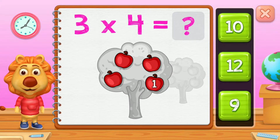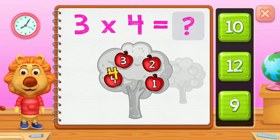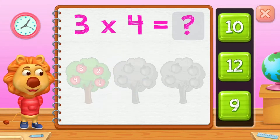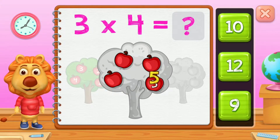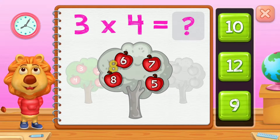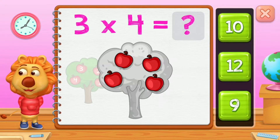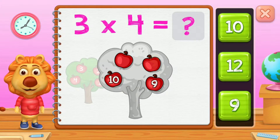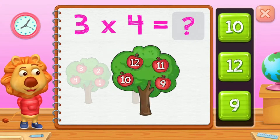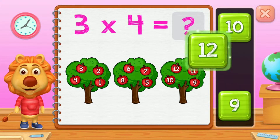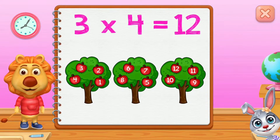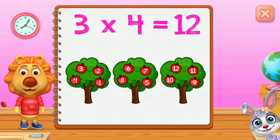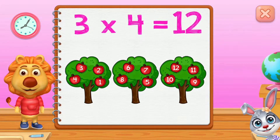One, two, three, four, five, six, seven, eight, nine, ten, eleven, twelve. Three groups of four equals twelve.